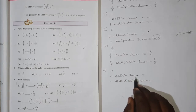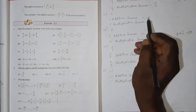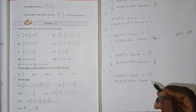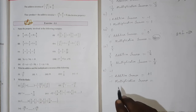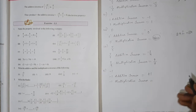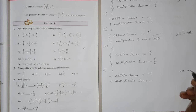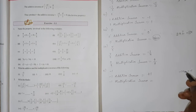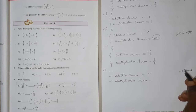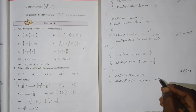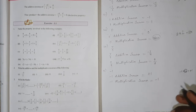For minus 1: the additive inverse of minus 1 is plus 1. The multiplicative inverse — minus 1 into minus 1 equals plus 1 — so the multiplicative inverse of minus 1 is minus 1 itself.